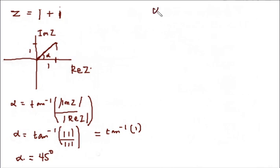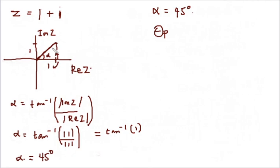Alpha equals 45 degrees. To find our theta_p, we need to start measuring from either the positive or negative real axis, picking the closest direction to our complex number. The closest is from the positive side to this point. Our theta_p in this case is equal to our alpha, because unlike the other side, we do not need to subtract 180 degrees.